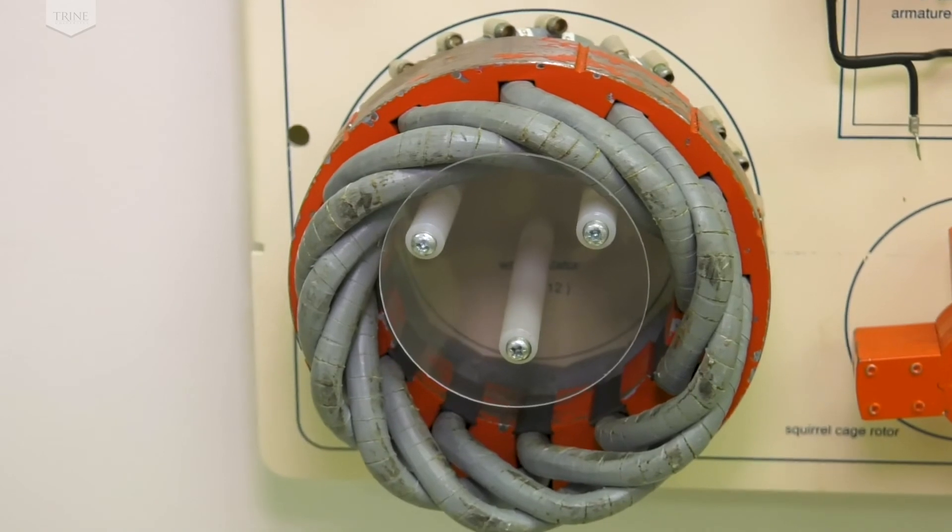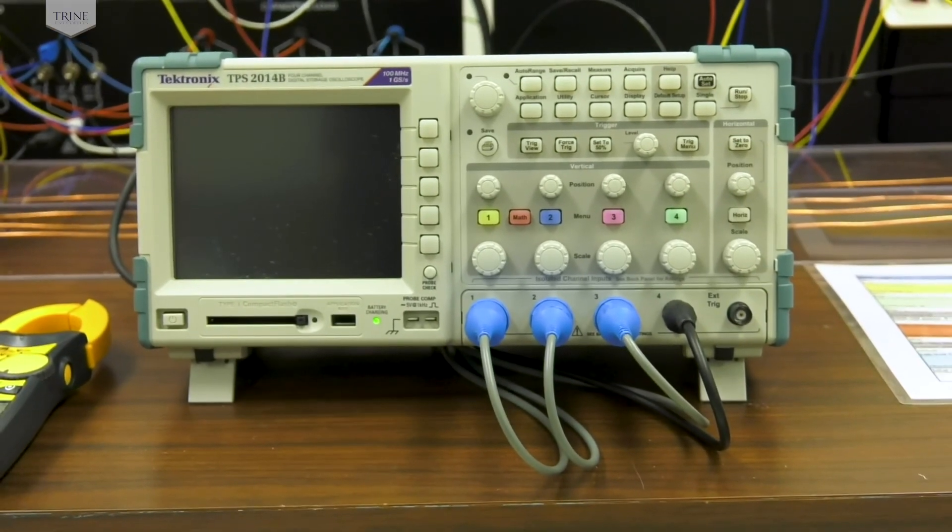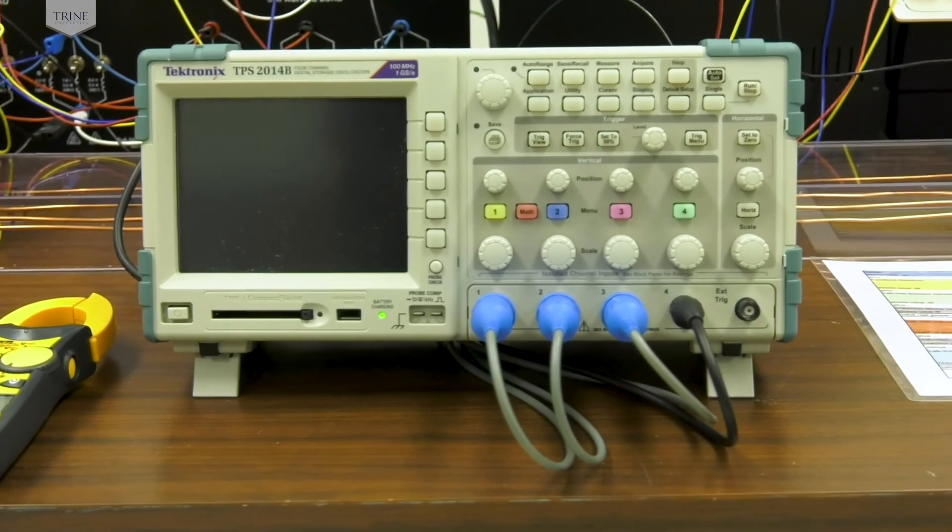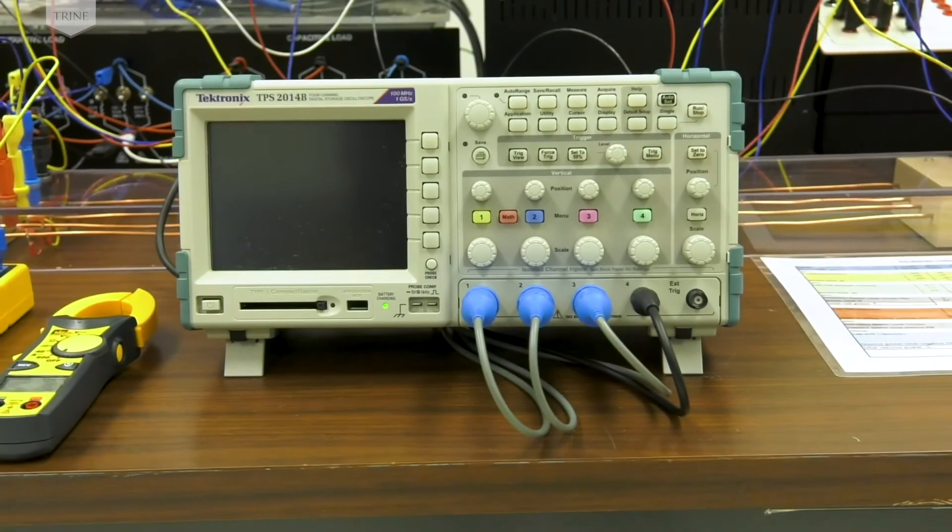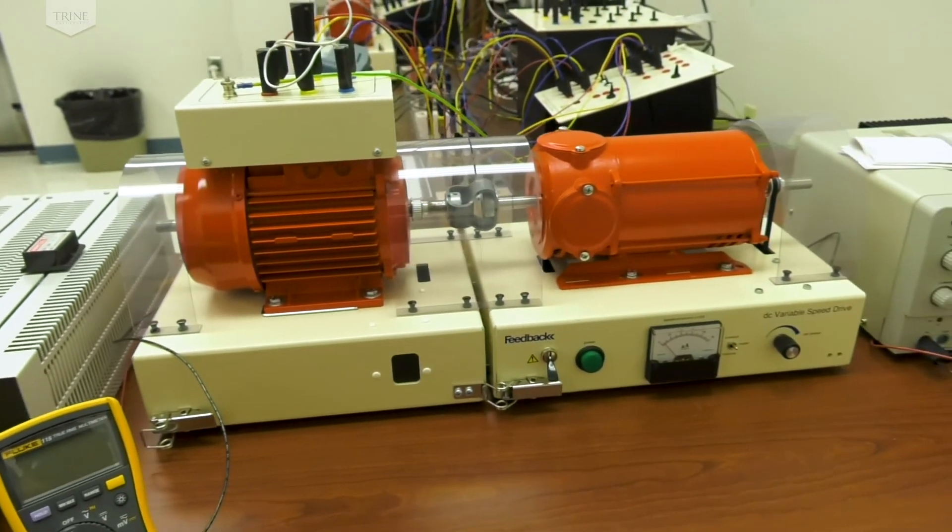High voltage oscilloscopes are used for power measurements. Students can see the three line voltages and the line current as they load the system with different power factors. An oscilloscope also allows students to see the voltage waveforms on either side of the switch when they are about to synchronize.